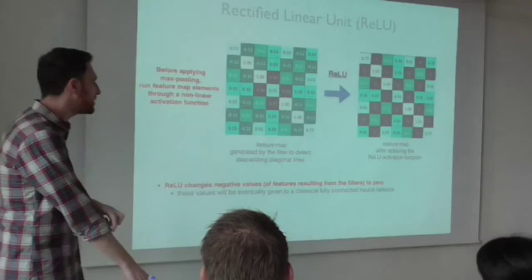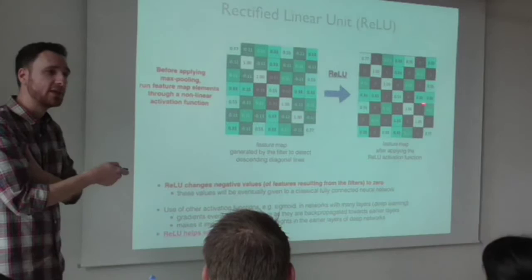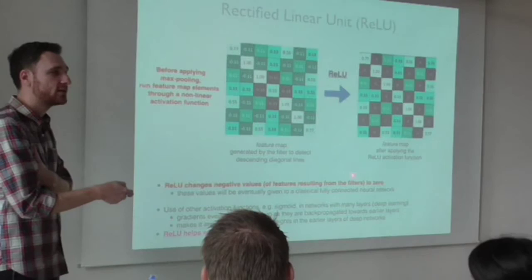That's what they call the vanishing gradient problem. It's really bad if you use something like a sigmoid activation function. If you use this other one — ReLU — this problem is not so bad. My understanding is that this is the main reason why people use it.